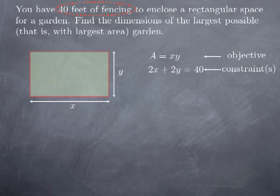The problem is symmetric in x and y — it doesn't change if I exchange the role of x and y. That means that if the problem is symmetric in x and y, so is the solution. In other words, the rectangle that maximizes the area is necessarily symmetric in x and y — in other words, it is a square. If it is a square of perimeter 40, the side of the square is 10 and the maximal area is 100.